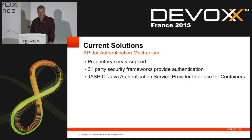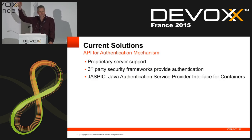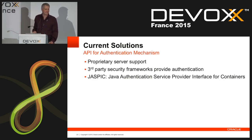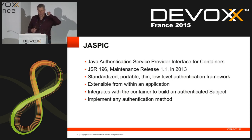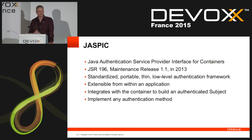The current solutions for authentication mechanism are proprietary server support, third-party security providers, and something called JASPIC — the Java Authentication Service Provider Interface for Containers. JASPIC is like a hidden gem — nobody's ever heard of it. It's actually been around for a while. It's an active standardized, portable, thin, low-level application framework. It's extensible within an application. And the really important part: it's already integrated into the servers. If you're a full EE server, you have to support JASPIC. It's optional for the web profile. JASPIC gives you the ability to implement any authentication method.